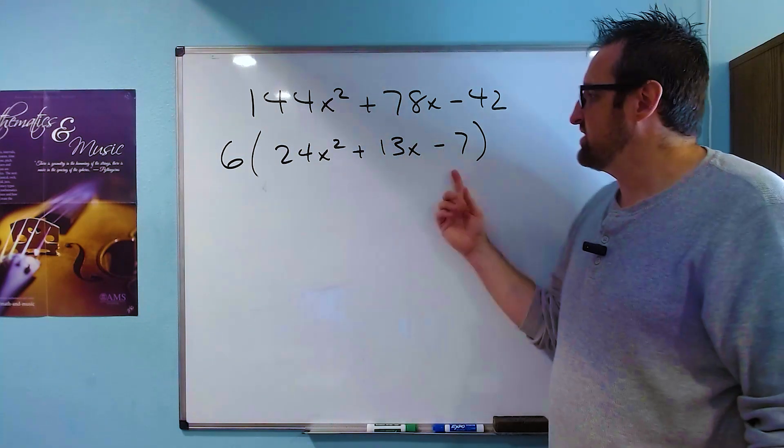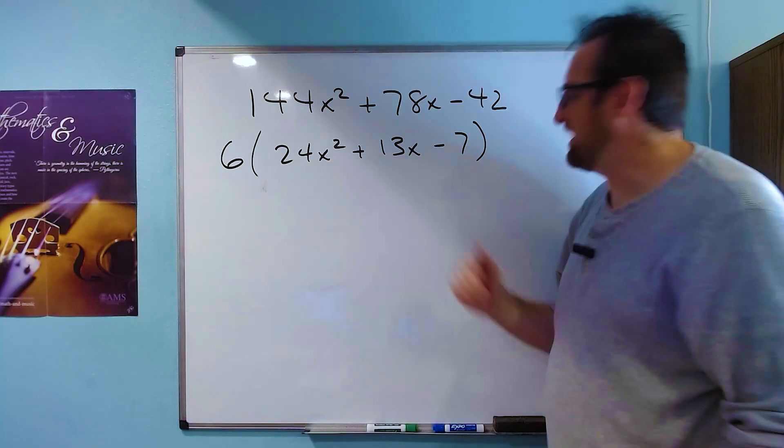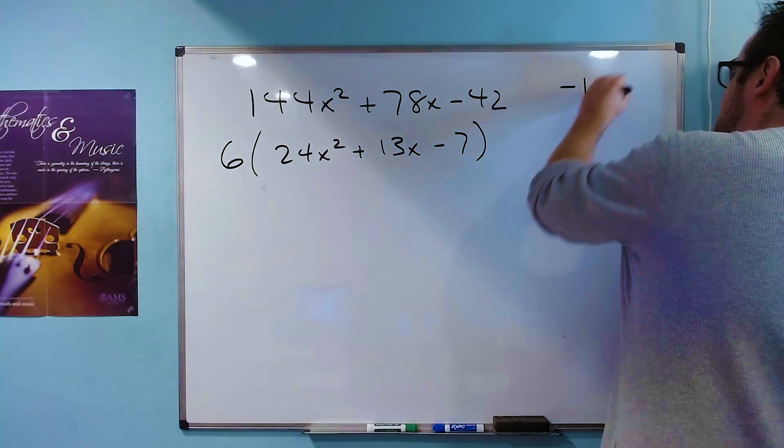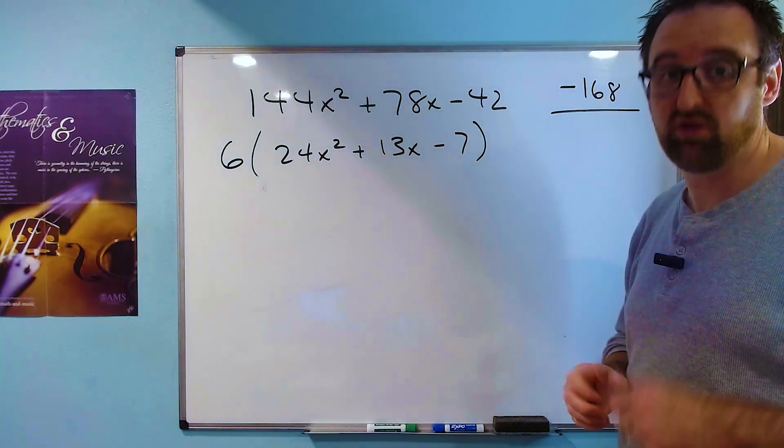Now we can apply the AC method to the terms inside. And it does get a little messy here. But 24 times negative 7 is negative 168. We need to find the factors of this guy. And we have a method to do that that we can count on.